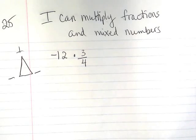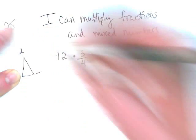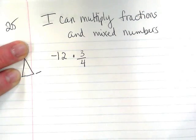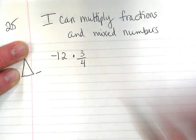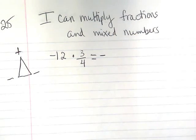I have a negative 12 and a positive 3 fourths. So if I'm covering up a positive and a negative, what's my answer going to be? Negative. Right. So let's just take care of that first, and then we'll deal with the multiplication.